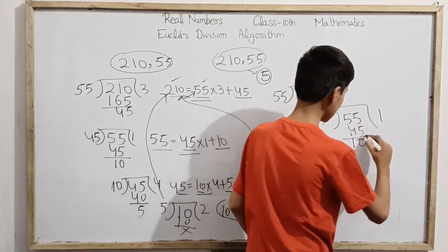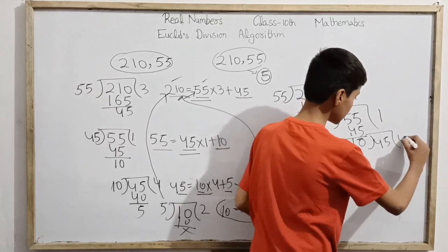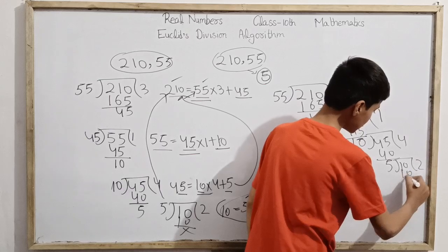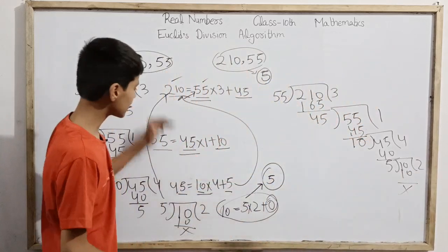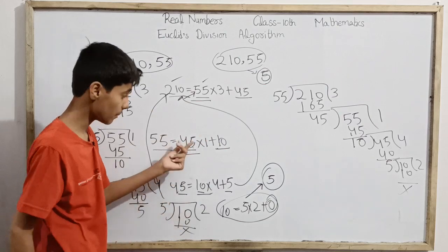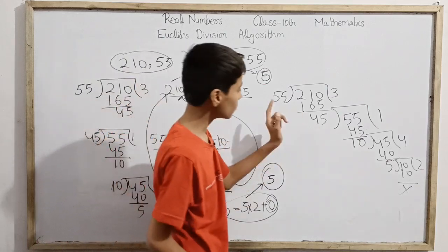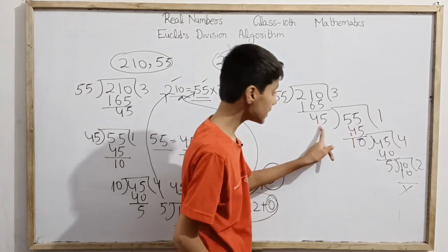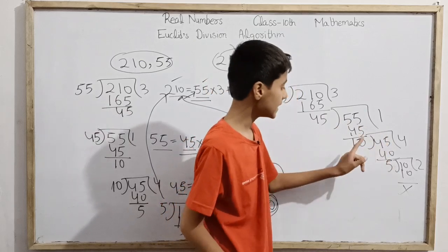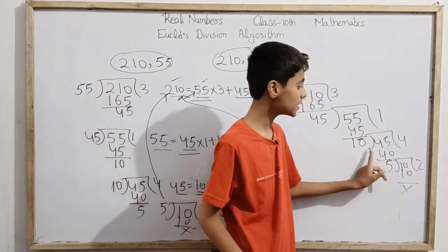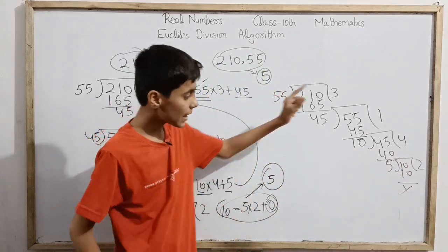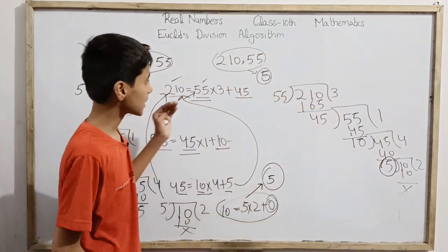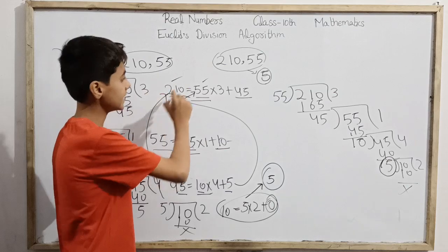We can continue this without much thinking about common divisors being the same. We directly make each divisor the next dividend, and each remainder the next divisor, until our remainder is zero. At that process, whatever is the divisor, that is the highest common factor, the greatest common divisor, HCF or GCD.